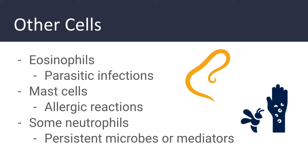Other cell types may be present in certain forms of chronic inflammation when particular stimuli are present. Eosinophils, for example, are commonly seen in parasitic infections because they have granules containing major basic protein, which is toxic to parasites. This protein can also cause lysis of mammalian epithelial cells, so eosinophils are effective at controlling parasites but also contribute to tissue damage in immune reactions.